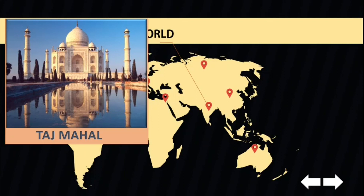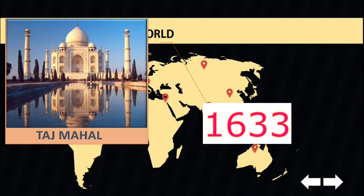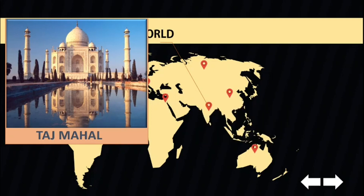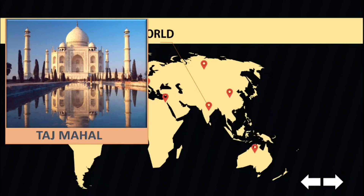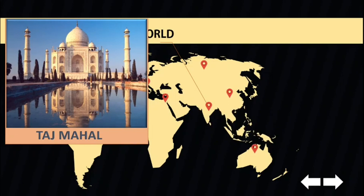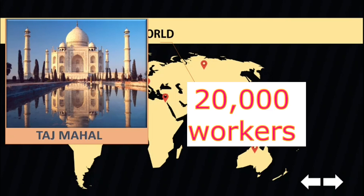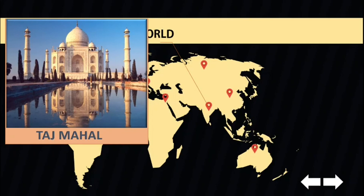Construction started in 1633, a year after his wife's death. The mausoleum was completed in 1648, with the surrounding buildings and gardens taking another five years to complete. The construction took 20,000 workers and craftsmen recruited from all across northern India. He exchanged a large palace in the center of Agra with Maharaja Jai Singh for the three acres of land where the Taj now sits.